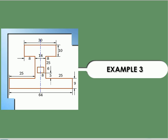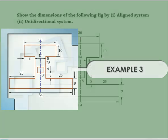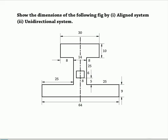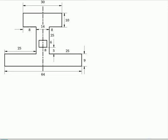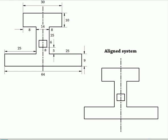Example problem. A view with wrongly represented dimensions is available. The task is to redraw the view with proper dimensioning norms as per the aligned system and unidirectional system separately. Aligned system: the dimensions are to be printed neatly as per the norm. All the dimensions are to be shown externally.